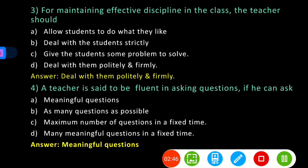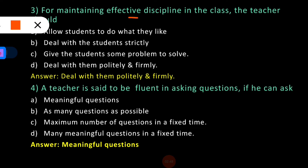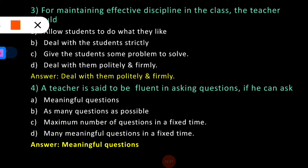The third question: For maintaining effective discipline in the class, the teacher should? The options are: (A) allow students to do what they like, (B) deal with the students strictly, (C) give the students some problem to solve, and (D) deal with them politely and firmly. The teacher should always deal with his or her students politely and firmly, so option D is the correct answer.